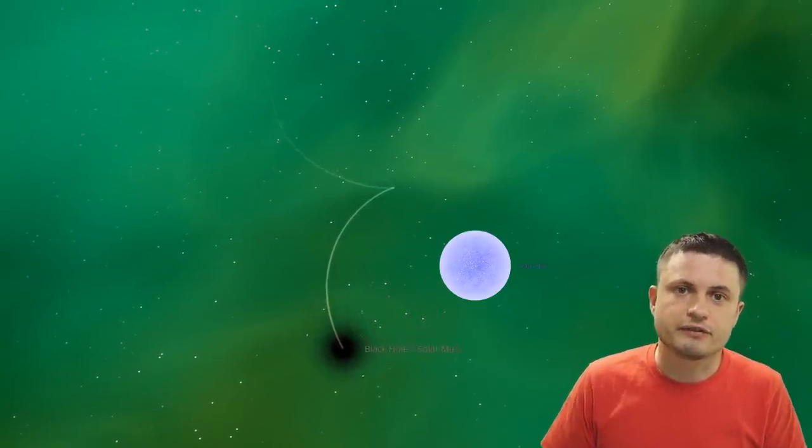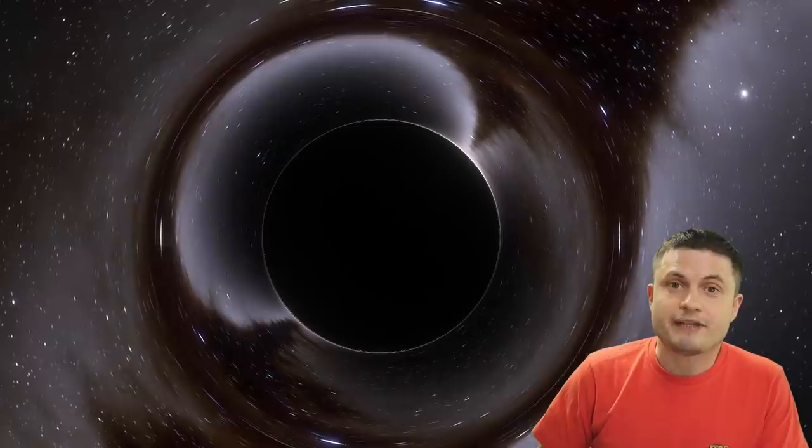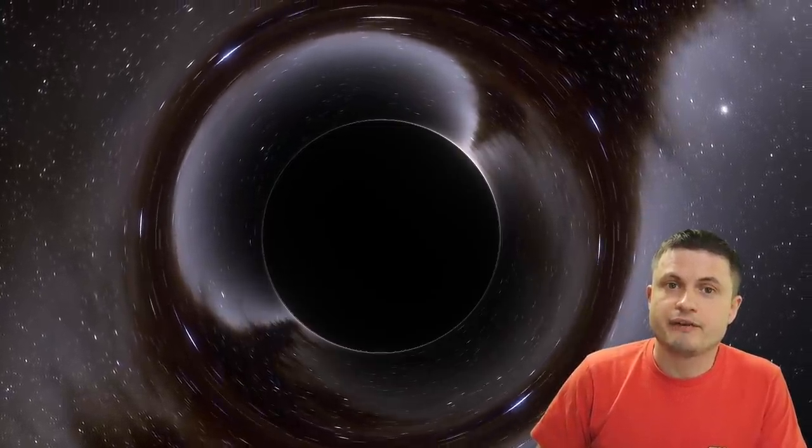So one major difference here is of course the fact that neutron stars have a surface. They have an actual hard surface that you could hypothetically stand on, although it's not really recommended. Black holes on the other hand don't have anything physical to stand on. Here we only have the event horizon, which is still a somewhat theoretical concept and we clearly have no idea what's really happening once you cross it, simply because we just don't have physics to explain any of this yet.